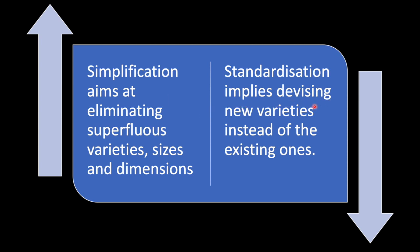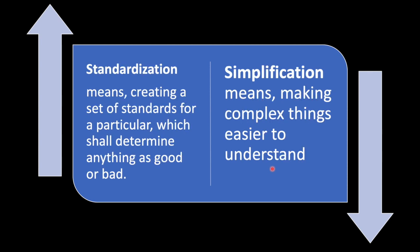Standardization implies devising new varieties instead of the existing ones. For example, removing existing varieties and developing new ones to be used further — that is standardization. It means creating a set of standards for a particular thing which shall determine anything as good or bad. Simplification, on the other hand, means making complex things easier to understand.